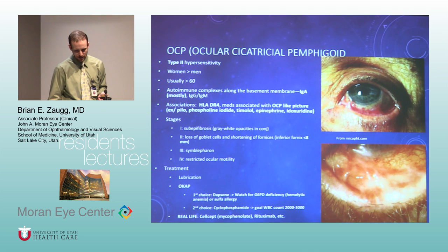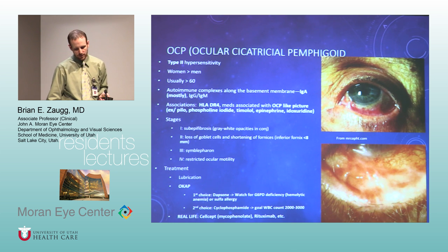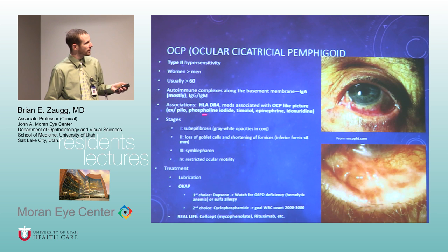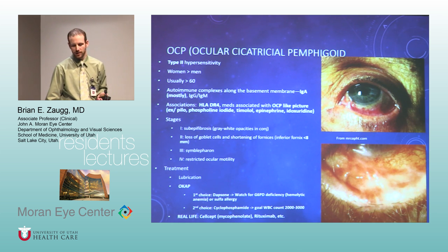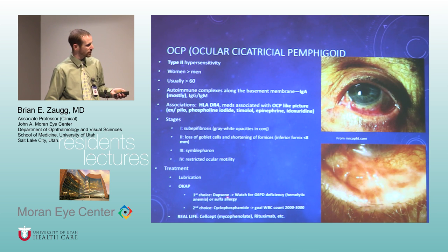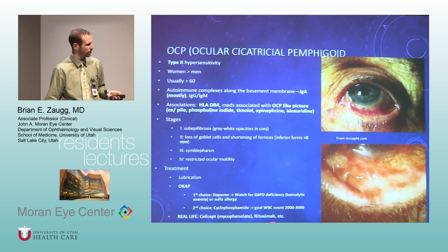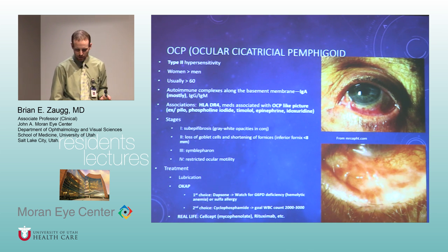OCP is type 2 hypersensitivity with immune complexes of IgA. Various drugs can cause chronic inflammatory scarring of the eyelids. On the test, you'll treat these patients with Dapsone, but watch out for G6PD deficiency or sulfa allergies. We're starting to use bigger medications like CellCept or Rituximab, which can keep the disease pretty quiet.